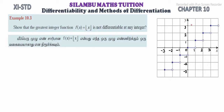Hi students. This is Silambo Max, division 11th standard, Example 10.3: show that the greatest integer function f(x) = [x] is not differentiable at any integer.